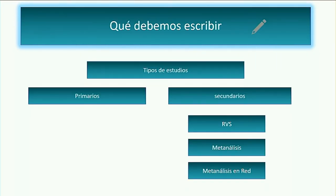Ahora, ¿qué debemos escribir? Esto me da la oportunidad de mostrar rápidamente los tipos de diseños. Los tipos de estudios están los primarios, donde todos tenemos nuestras bases de datos guardadas y hacemos nuestros trabajos. Los secundarios son trabajos de primarios ya publicados; nosotros los recolectamos y tenemos revisiones sistemáticas de la literatura. Cuando esta revisión sistemática se vuelve cuantitativa y los artículos son de tan buena calidad que podemos sacar conclusiones estadísticas, se llaman metanálisis; y últimamente con un auge particular, los metanálisis en red.